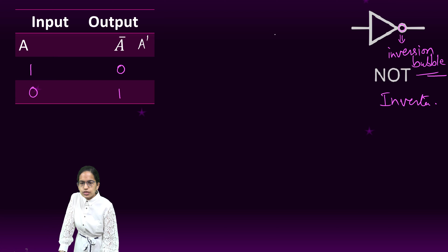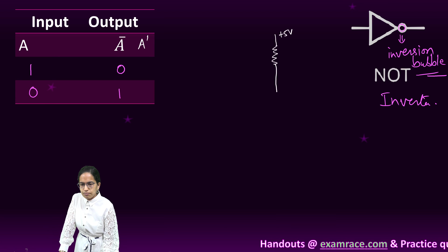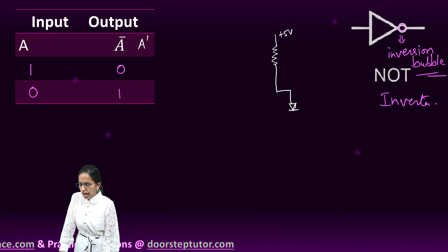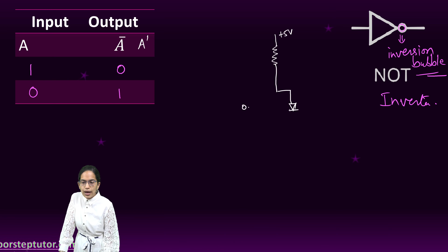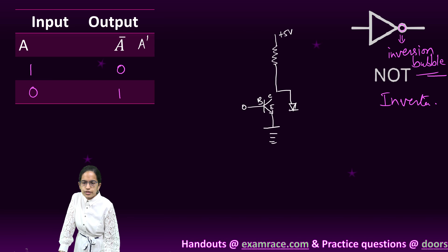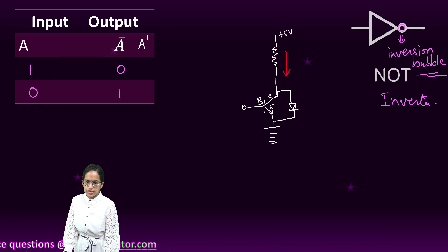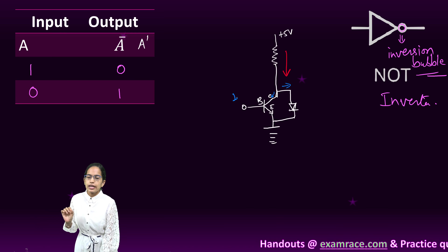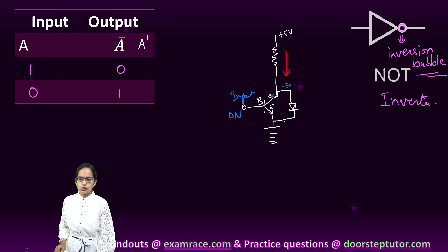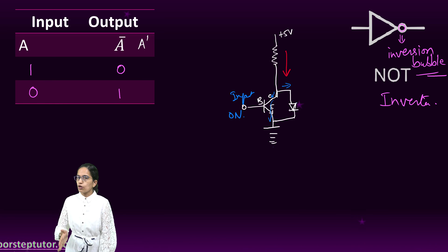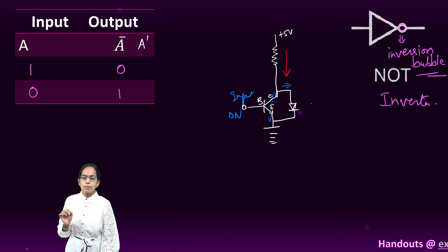Let me draw the circuit diagram for NOT. I have 5 volts connected, and through the resistor the current passes. I connect the LED and also connect the transistor in parallel. Here is the base, collector, emitter, and this is the ground. The current has an option to either go through the LED or follow the path of the transistor. If my input is on, the current flows through the collector to the emitter and finally to the ground, following the path of least resistance — so if the input is on, the LED would be off.